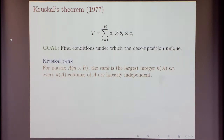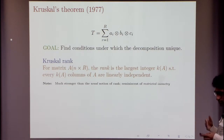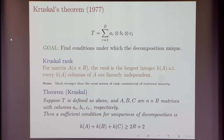An interesting notion that Kruskal introduced — also later introduced in different communities — is what's now called the Kruskal rank. For an n×R matrix, its Kruskal rank is the largest integer K such that every K columns are linearly independent. Note that it is much stronger than the usual notion of rank, which essentially requires some K columns to be linearly independent. It's also related to notions studied in compressed sensing.